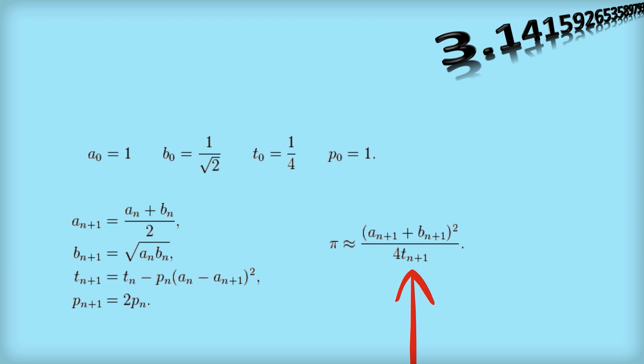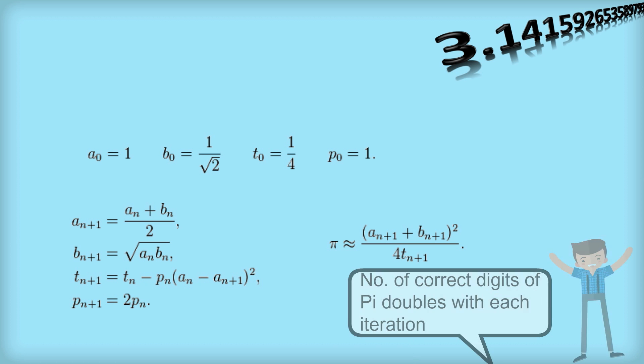And then over here, you can see we can put in the values that we get to get a value of pi. And as we do more of these, we then work out a2, b2, t2, p2. And we continue that. We get closer and closer to pi. But this works really well. The number of correct digits of pi doubles with each iteration. So that's fabulous.